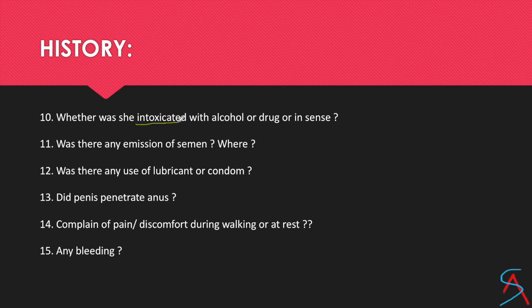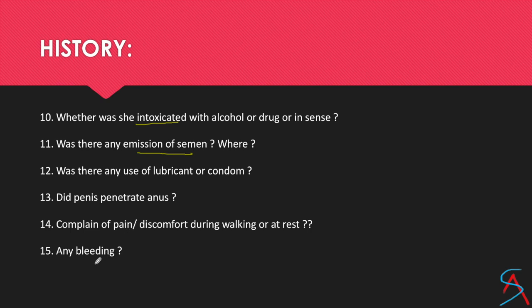Ask whether she was intoxicated with alcohol or any drug was given before the incident. Ask about any emission of semen — whether the person was wearing a condom or not — and if there was ejaculation, whether it was inside or outside, so you know where to collect the semen. Don't forget to ask about anal penetration, because in some rape cases there is no vaginal penetration, only anal, and many doctors miss that. Ask about pain or discomfort during walking, and whether there was any history of bleeding.